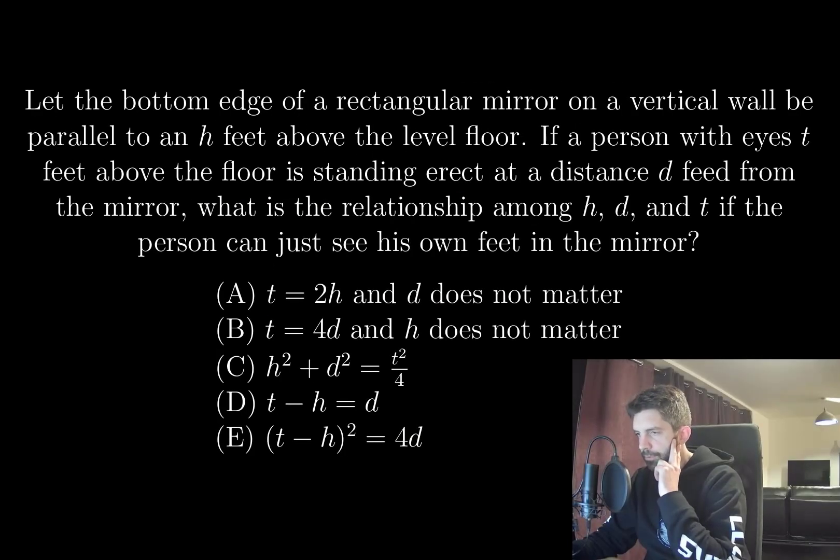Let the bottom edge of a rectangular mirror on a vertical wall be parallel to and H feet above the level floor. If a person with eyes T feet above the floor is standing erect at a distance D feet from the mirror,